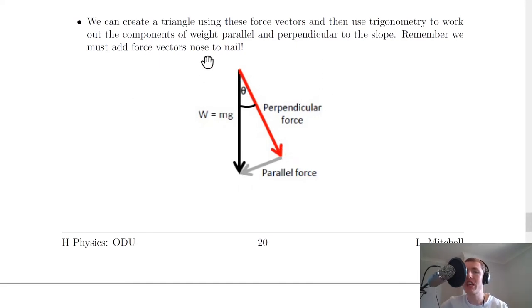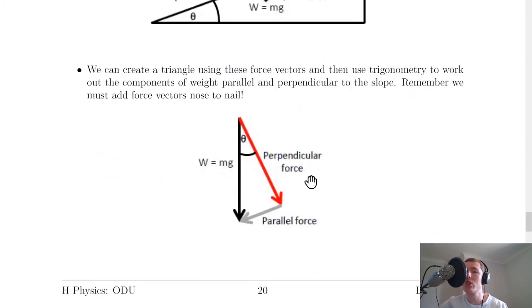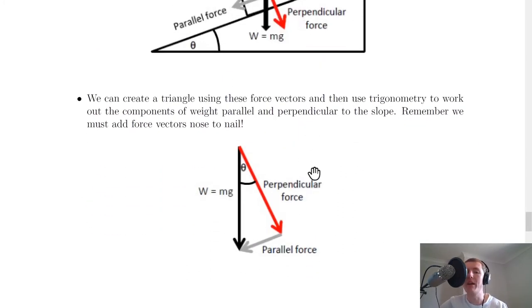Remember we have to add the force vectors nose to tail. We've taken this vector and this vector and moved the parallel force from here down to complete this triangle. It's just been enlarged and taken from that bit there.